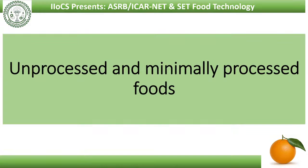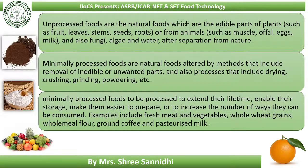Let us first see what unprocessed and minimally processed foods are. Group 1 unprocessed foods are natural foods which are the edible parts of plants such as fruits, leaves, stems, seeds, and roots, or from animals such as muscle, offal, eggs, and milk, or from sources of fungi, algae, and water. These unprocessed foods are natural foods which have not undergone any kind of processing.